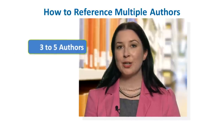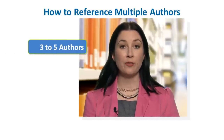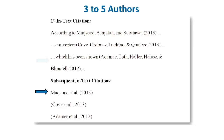Next, let's look at what to do in the text when you have three, four, or five authors. The first time you cite sources with three to five authors, you include all the last names, just like how we cited two authors. After that, when you cite the same source again, you can use the abbreviation et al., which is Latin for 'and others'.